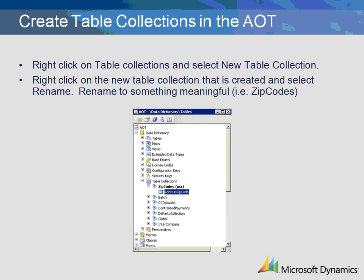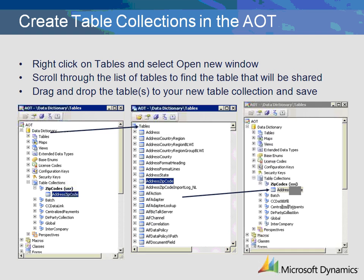To create new table collections in the AOT, right-click on Table Collections and select New Table Collection. A new table collection will be created. Right-click on the new table collection and select Rename. Rename the table collection to something meaningful, for example, zip codes. Right-click on Tables and select Open New Window. A new form will open that lists all of the Microsoft Dynamics AX tables. Scroll through the list to find the tables that will be shared. Drag and drop the tables to your new table collection. Save the new table collection and then exit the AOT.